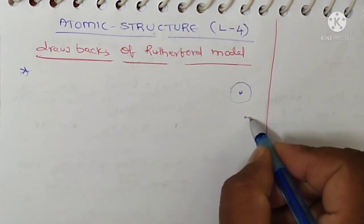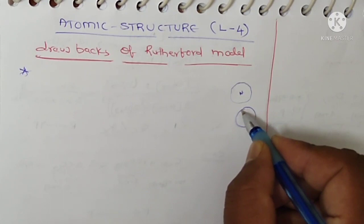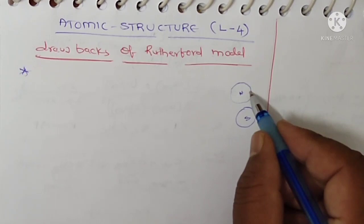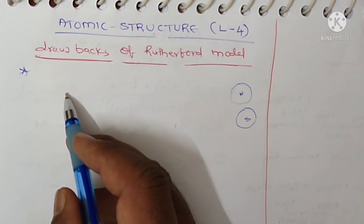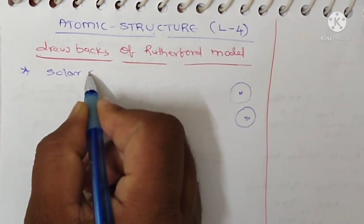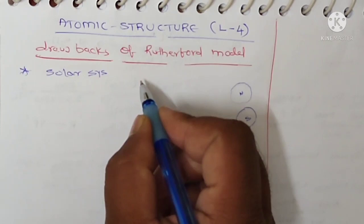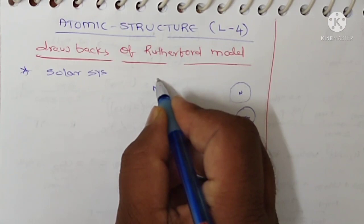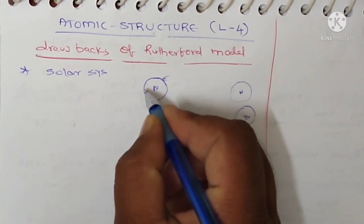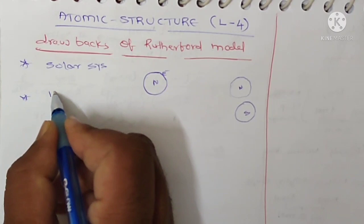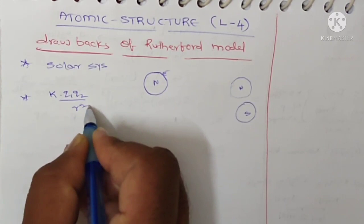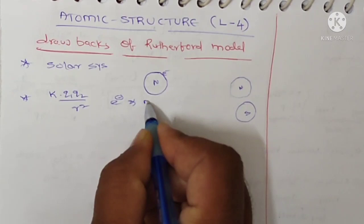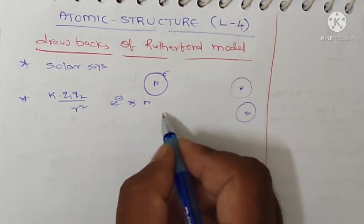Rutherford model is like a solar system. In the solar system, the planets are revolving around the sun. Like that, the electrons are revolved around the nucleus. So Rutherford model is like a solar system — nucleus playing the role of the sun and electrons playing the role of planets. Around the nucleus, electrons are revolving, and there is a Coulombic force KQ1Q2 by R square between the electrons and nucleus. It is similar to that of the gravitational force.